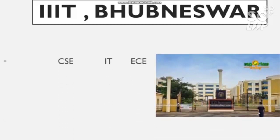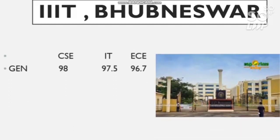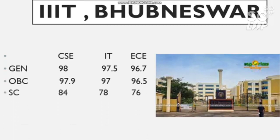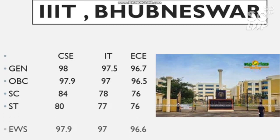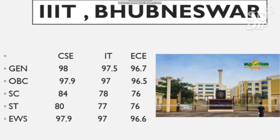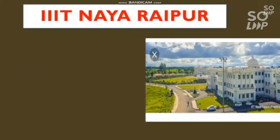The next institution is Triple IT Bhubaneswar, also considered an NGFTI. The cutoff for CS, IT, and EC branches: General requires 98, 97.5, and 96.7. OBC requires 97.9, 97, and 96.5. SC category requires 84, 78, and 76 percentile. ST category requires 80, 77, and 76 percentile. EWS requires 97.9, 97, and 96.6 percentile.